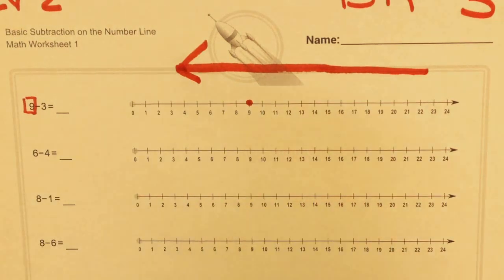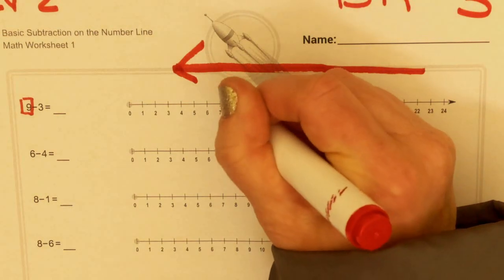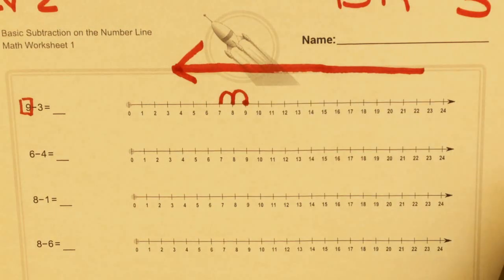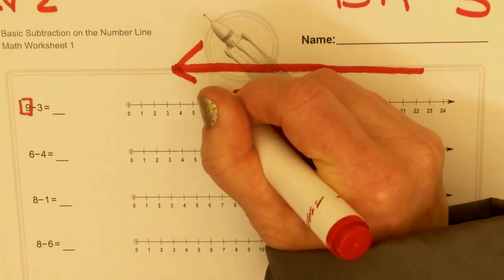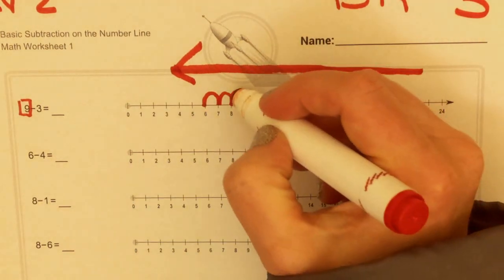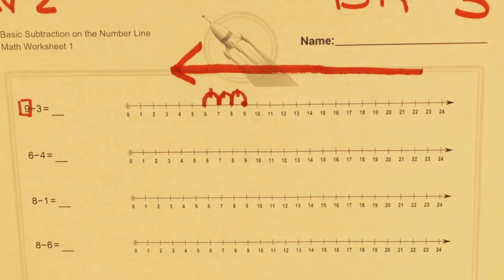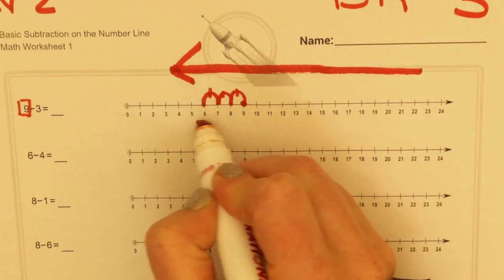1 hop, 2 hops, 3 hops. I can very clearly see that I've taken 1, 2, 3 hops, and I've landed on the number 6.